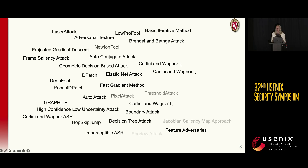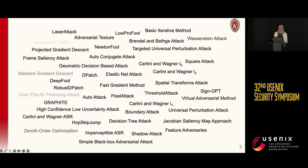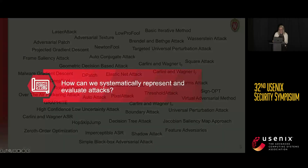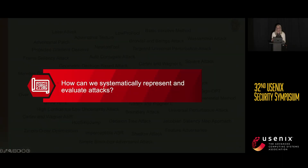Yet, even with all of these attacks, it's difficult to say what we've actually learned about crafting adversarial examples, both from a perspective of what is advantageous for an attacker or a defender to use, but also from the perspective of where this disconnect between human classification and model classification actually starts diverging. But in order to make progress on both of these fronts, we not only need a more systematic way of designing and representing attacks, but we also need a methodology that allows for fair and clear comparison between attacks so that we can begin to understand what works well and why.